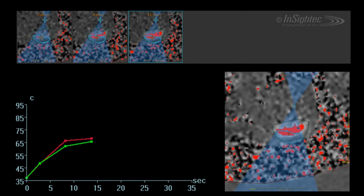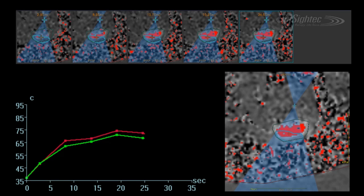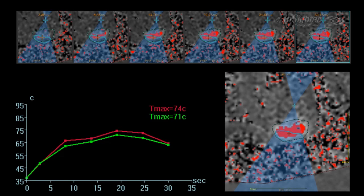MRI provides real-time measurement of thermal changes in the tissue. Every five seconds during the sonication, a new thermal MR image is acquired and temperature rise is displayed. If the rise is insufficient, parameters can be adjusted to achieve the desired temperature.